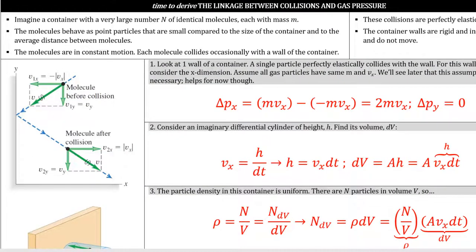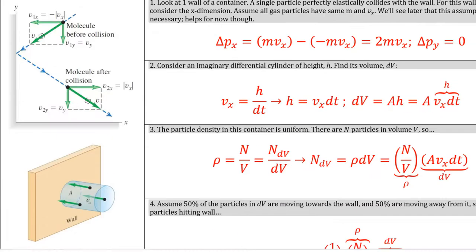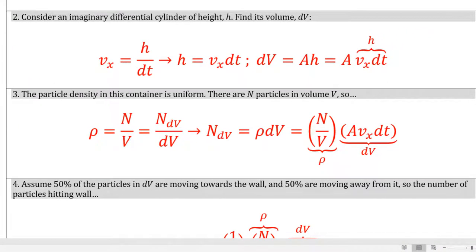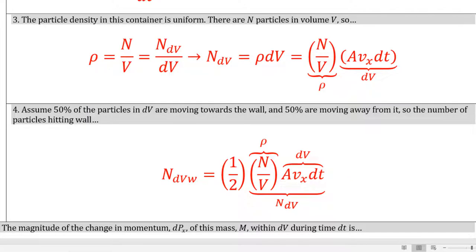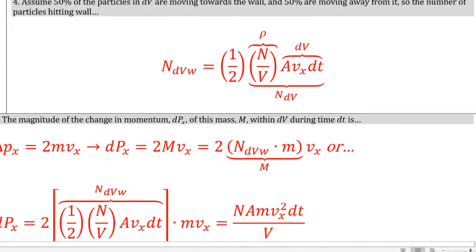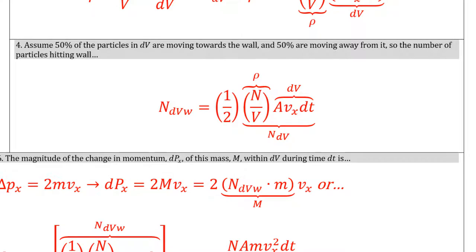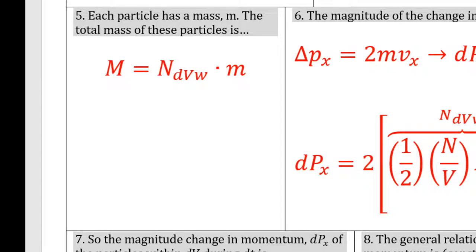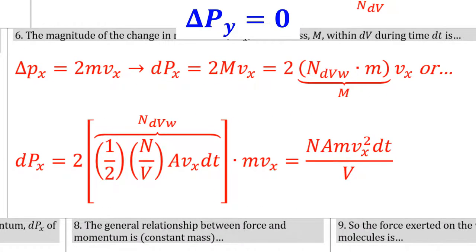Here's how I can formulate the change in that particle's x-momentum and y-momentum. Box 2 references that small blue differential volume cylinder visible on the bottom left. It uses basic kinematics and geometry to come up with an expression for the volume of that infinitesimally small differential blue cylinder. Box 3 uses basic density definitions and rearranges to give an expression for the number of particles in that tiny blue cylinder. Box 4 assumes that on average half the particles are moving to the left towards the left wall and half are moving rightward. Box 5 gives an expression for the total mass heading towards the left wall in that differential cylinder. Box 6 gives an expression for the change in x-momentum and y-momentum felt by the walls upon impact.